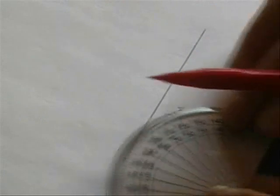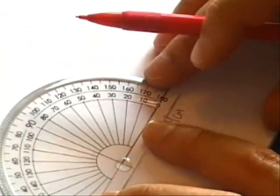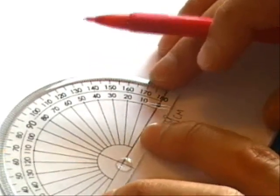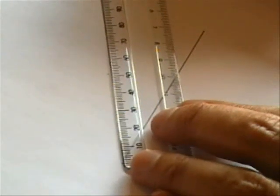I'm going to measure an angle of 30 degrees and I'll do that from this side over here. Using my protractor, using my zero, I'll measure 30 degrees which is here and I will carry that length on.